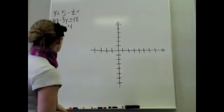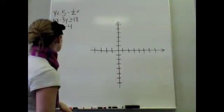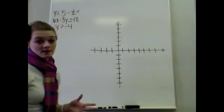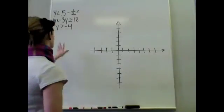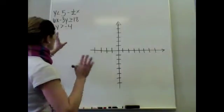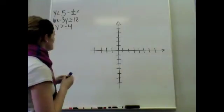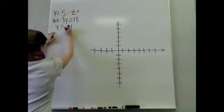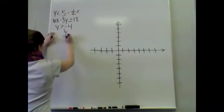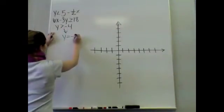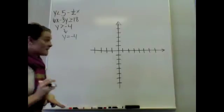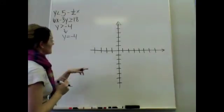So I'm looking at this and I'm thinking, oh my god, what am I going to do? Well, I'm going to start with the easiest equation. I'm going to make them all really equal signs. So y is greater than negative 4 — it's really just graphing the line y equals negative 4. Easy peasy.